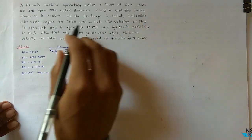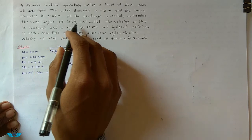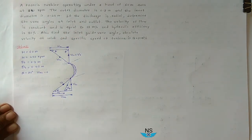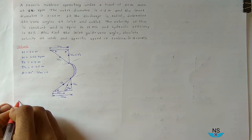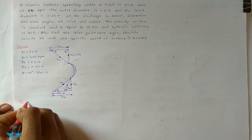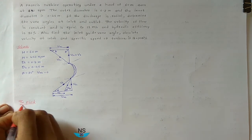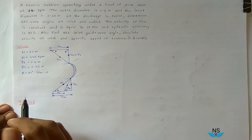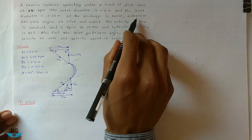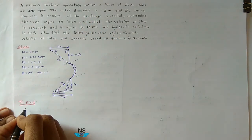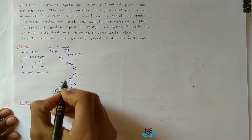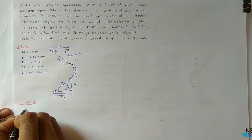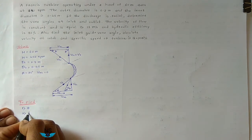Now we need to determine the following: vane angle at inlet theta, vane angle at outlet phi. The velocity of flow is constant and equal to 12 meters per second at both inlet and outlet. The vane angle at inlet is theta and the vane angle at outlet is phi.